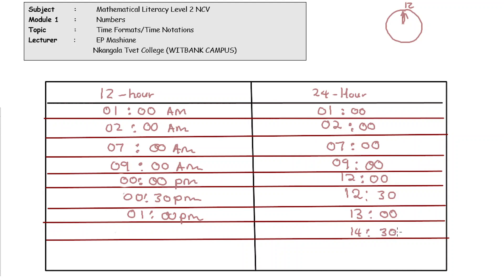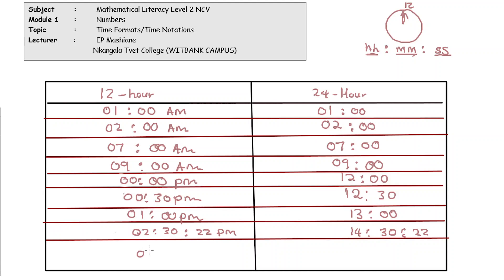Your clock displays hours before the colon, minutes after the first colon, and seconds after the second colon. So a 24-hour clock reading of 14:30:22 means 14 hours, 30 minutes, and 22 seconds. On the 12-hour clock that would be displayed as 02:30:22 PM.